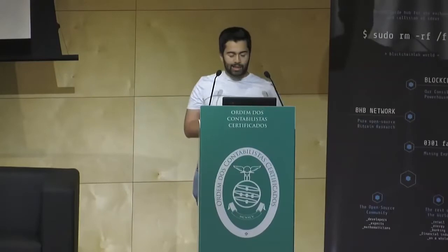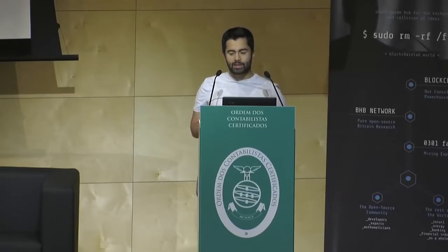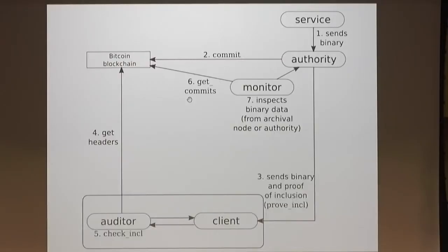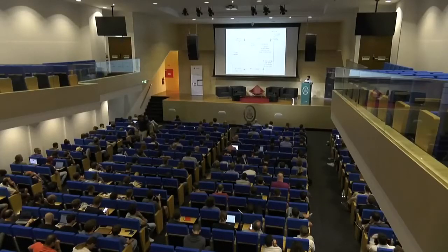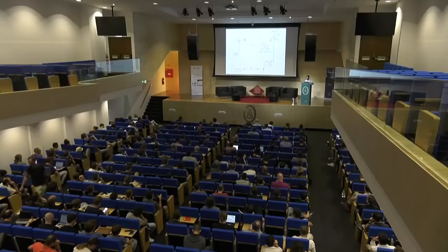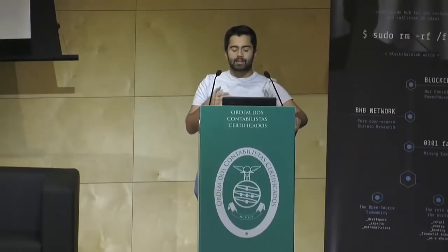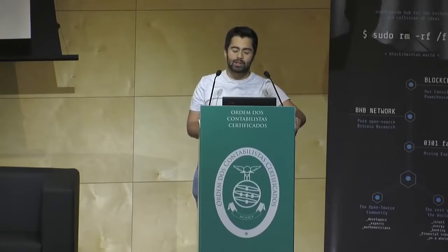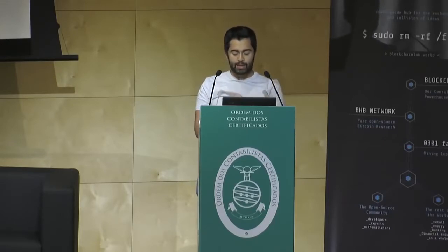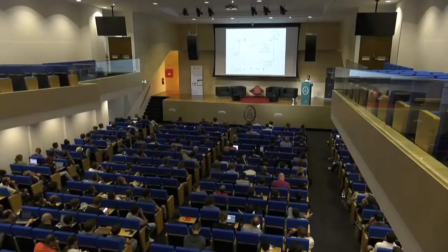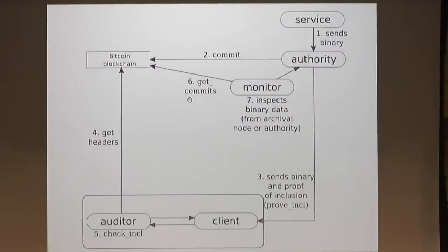The client or auditor validates the inclusion proof by running an SPV client that downloads all Bitcoin block headers to verify these inclusion proofs. The monitor inspects the Bitcoin blockchain for any transactions signed by the authority's Bitcoin address, monitors the binary batch Merkle root to see what has been committed, and inspects the binary data to detect anything interesting—for example, a binary that no one knows about or that hasn't actually been distributed.